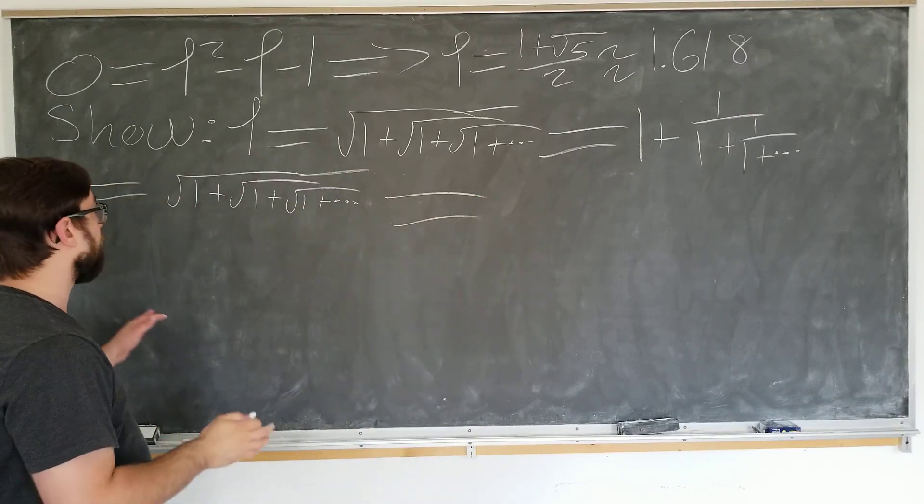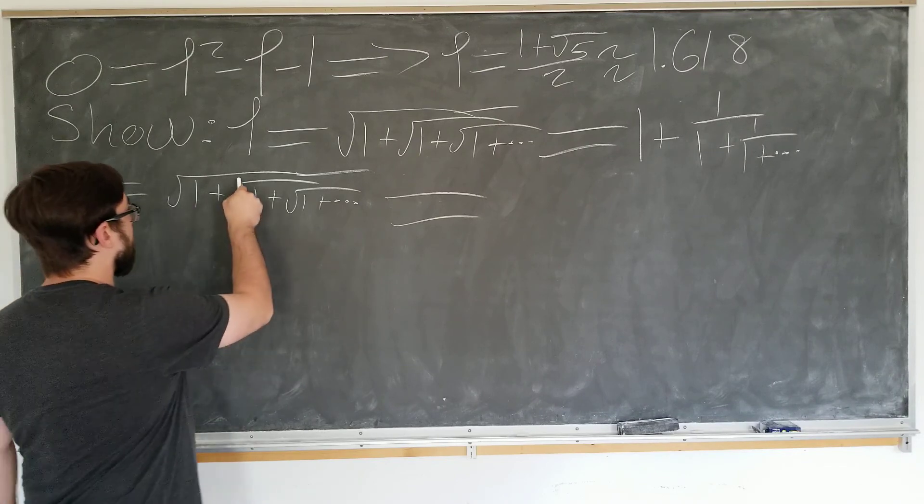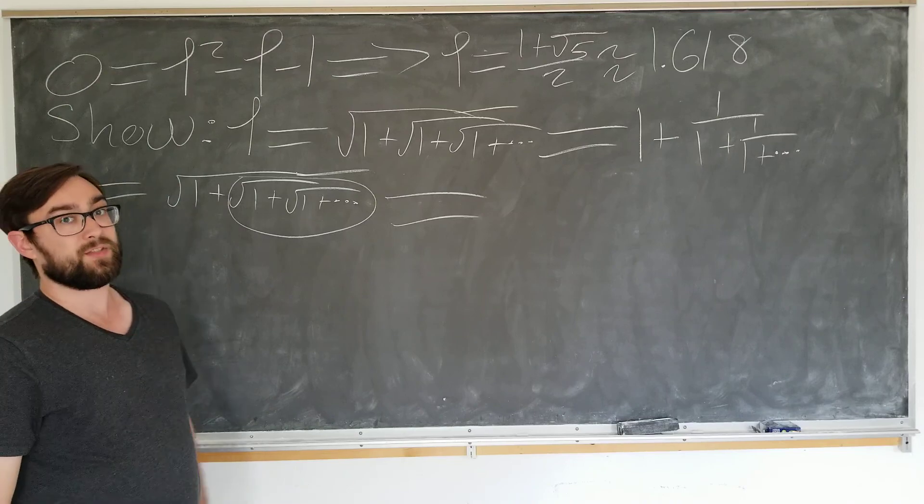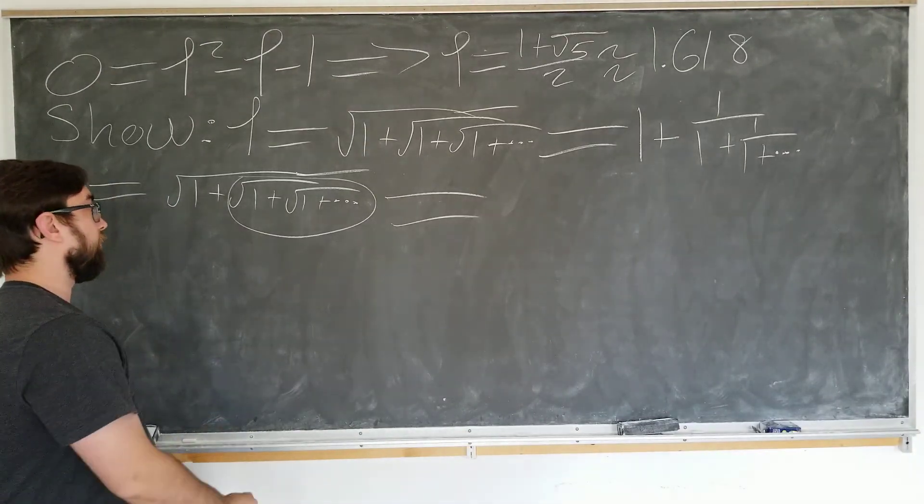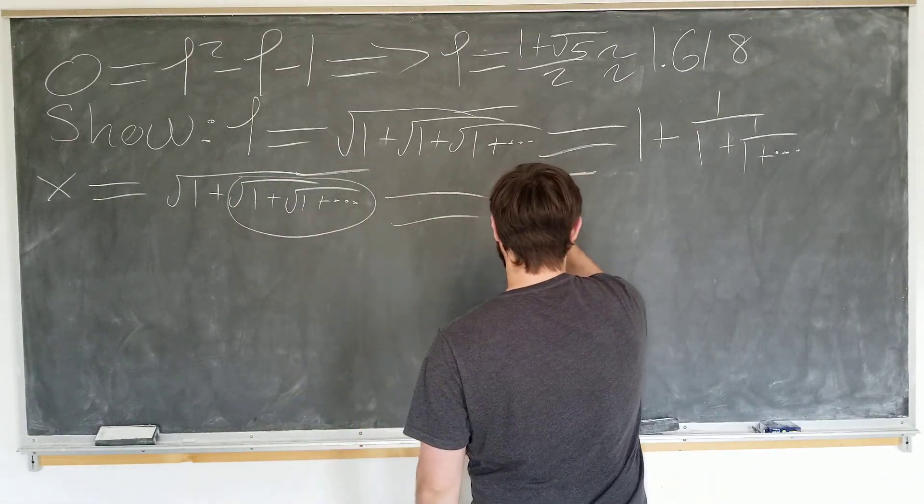Well, now we're going to use the nesting property of this, that x may be out here, but it's also in here as well. This is the same nesting property that we used on the previous video about the golden ratio as well. Well, this is actually equal to the square root of 1 plus x.